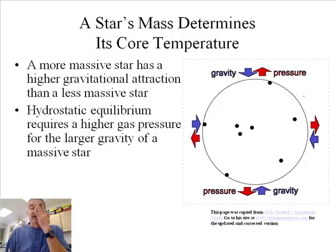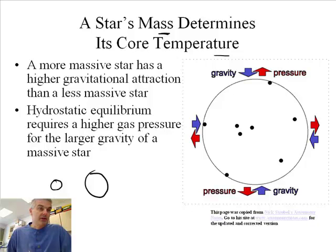Before we talk more about these main-sequence stars, we want to talk about something important here. The star's mass determines its core temperature. Remember there's different kinds of stars. There's low-mass stars and high-mass stars. Our sun is a low-mass star. It's got the mass of our sun, and these are like 10 masses of our suns.